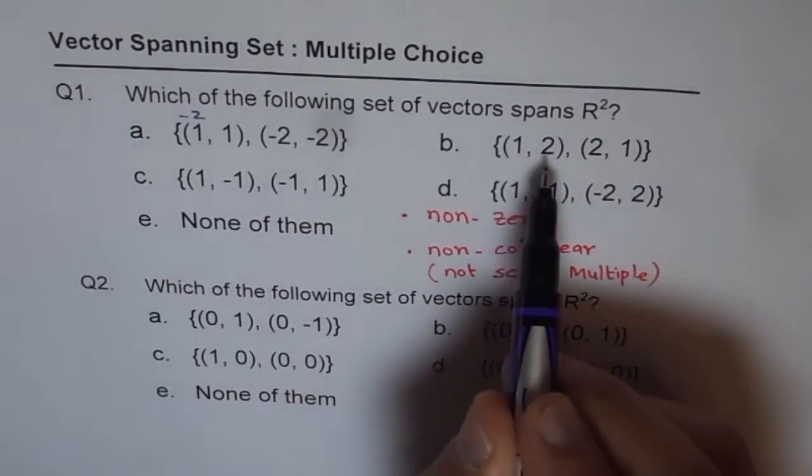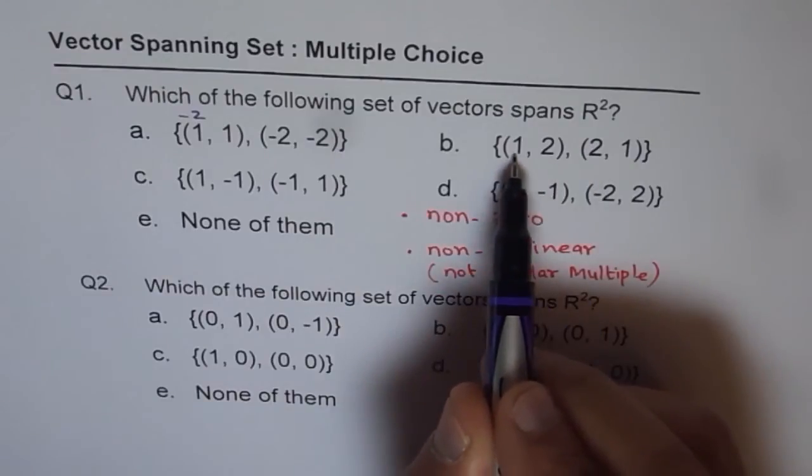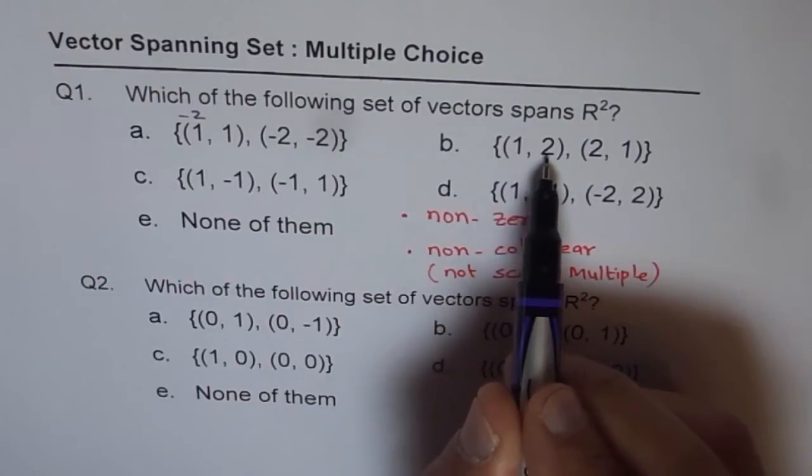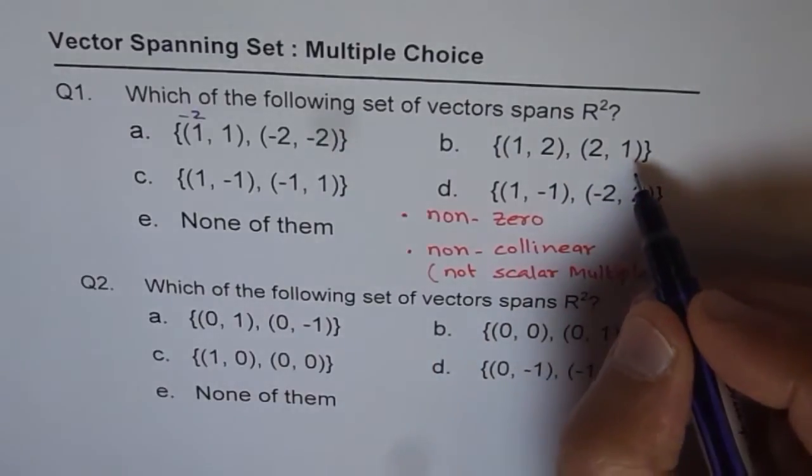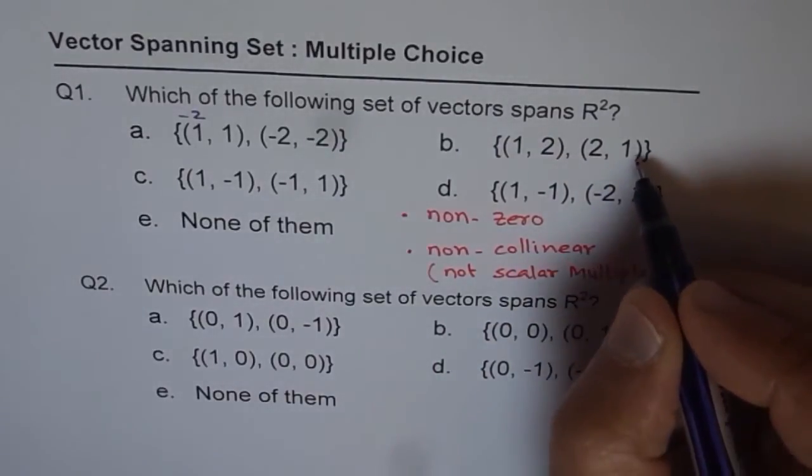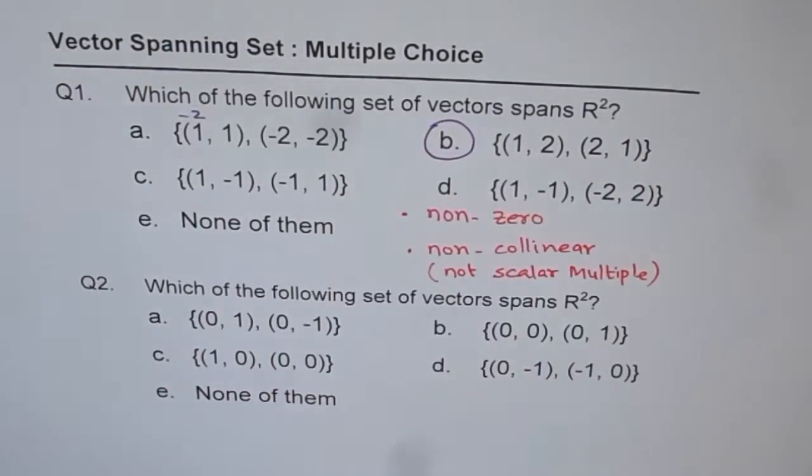Now B is (1, 2) and (2, 1). If I want to get 2 from 1 I need to multiply this by 2. But 2 times 2 is 4. So this is not a collinear vector. So it is non-collinear and non-zero. So it can definitely span. So that is definitely our answer.